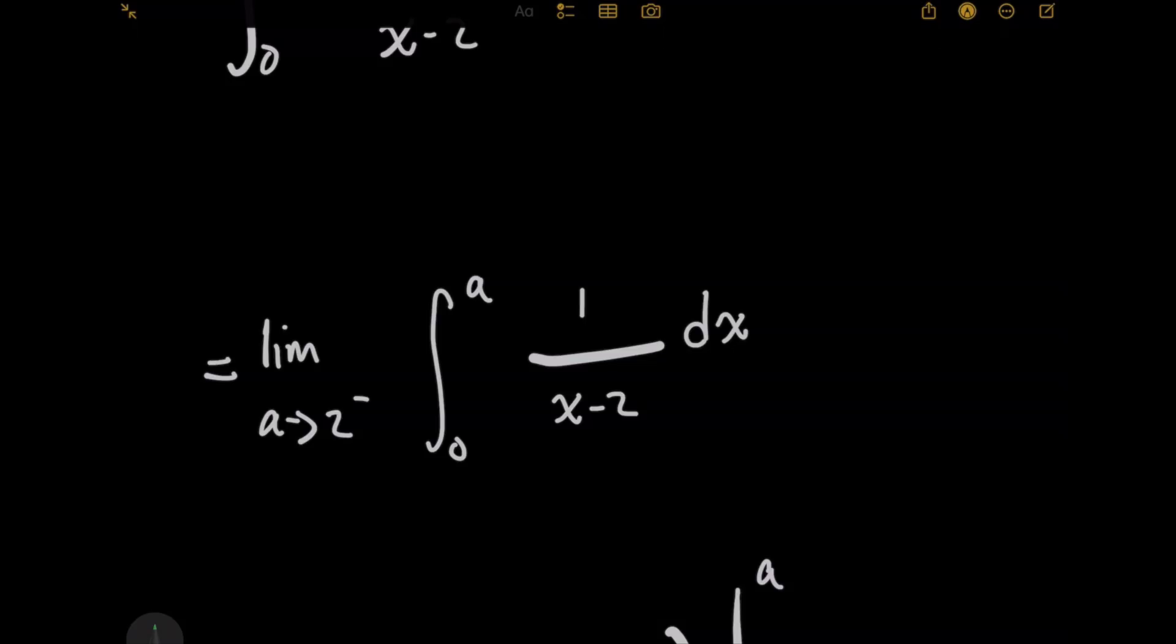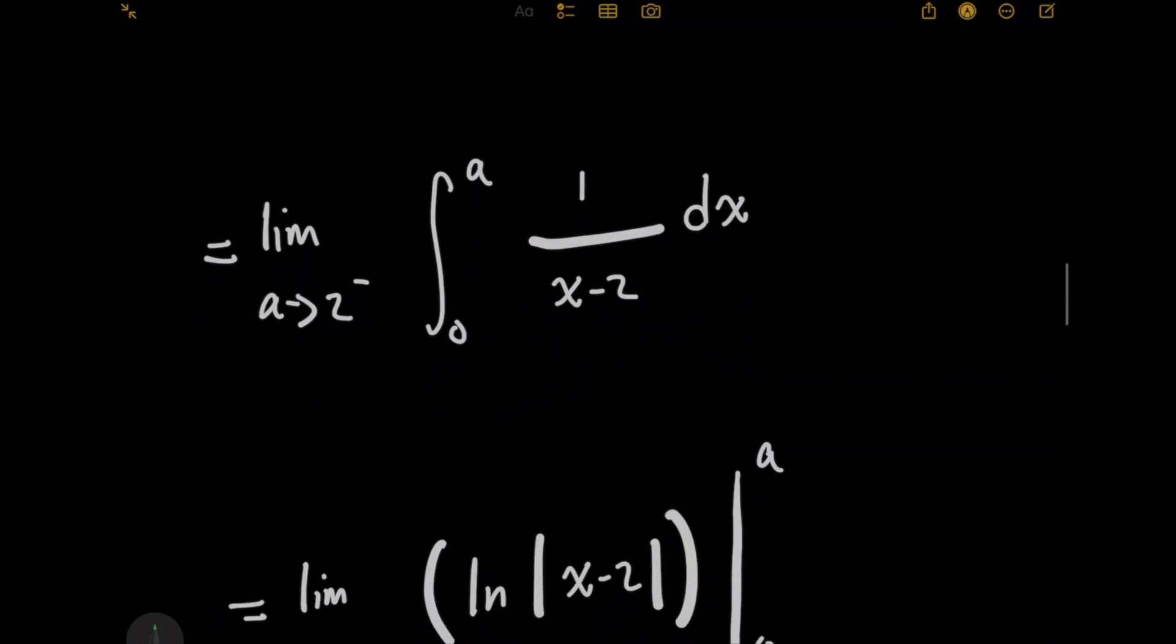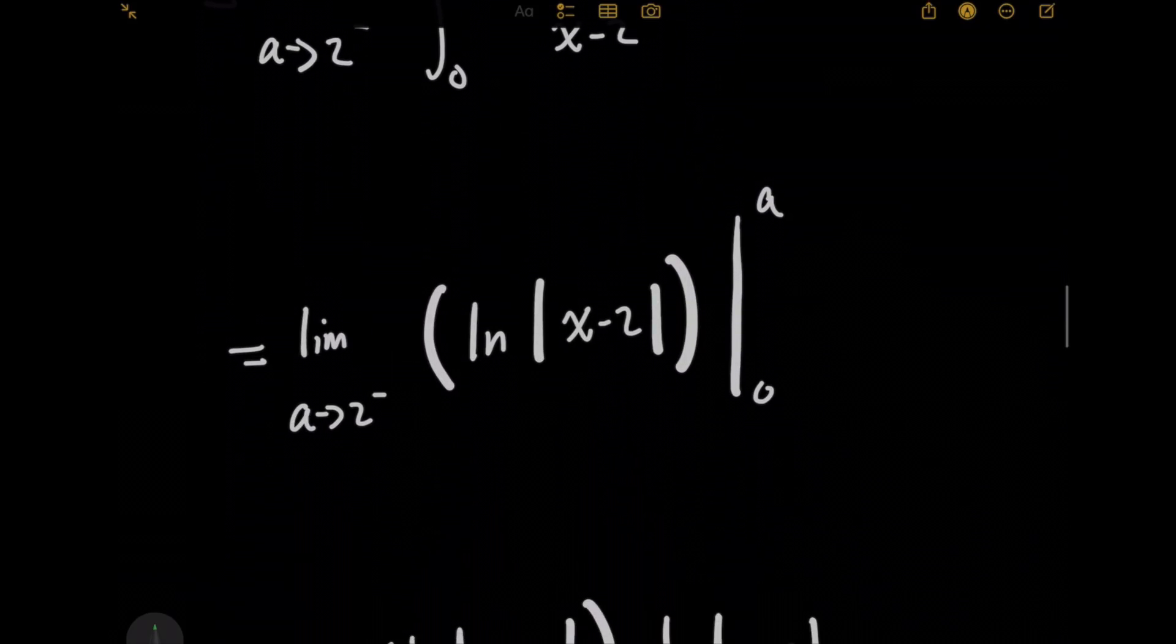And you may already be able to do this integral in your head. If you can't, that's okay. This is a typical U substitution problem where you can let U equal x minus 2. And then when you integrate this, you'll get the natural log of the absolute value of x minus 2. And so we're going to evaluate this now from an upper limit of A down to 0, which is the lower limit.